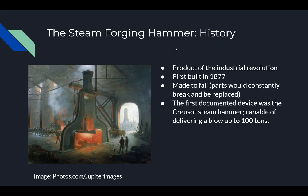So a little bit about the steam forging hammer. It was a product of the Industrial Revolution. As people began creating more and more large steel structures, we needed more power to pound that into a shape. The first one was built in France, and it could deliver a blow up to 100 tons, which astonishes me. Something very interesting about it was that it was made to fail. A lot of the components of this hammer were made so that over time they would decay and break and would have to be replaced.